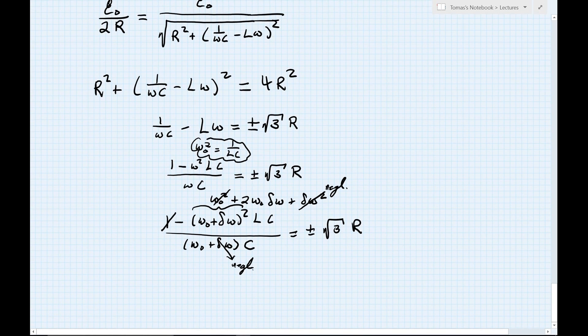And once we've done that, we have just one term in the numerator and one term in the denominator, and we can begin to cancel terms. Notice that this capacitance c cancels nicely with this factor of c. This factor of omega naught in the remaining factor in the numerator cancels this omega naught from the denominator. And I'm left with minus 2 delta omega times l is plus or minus root 3r.